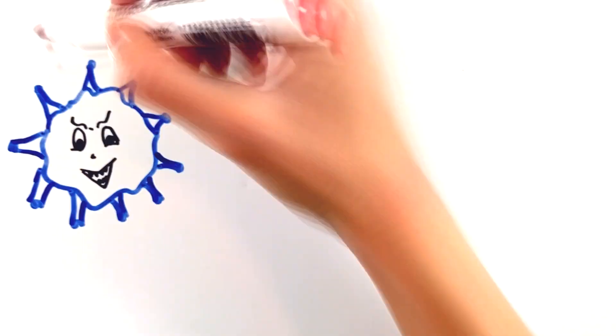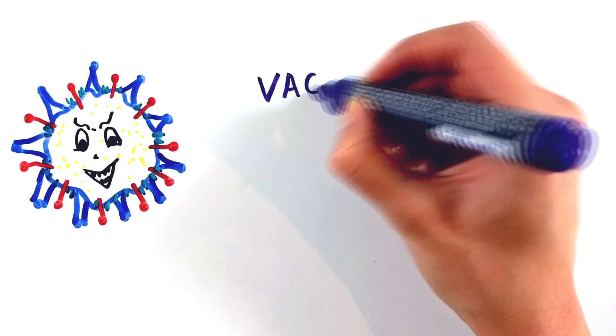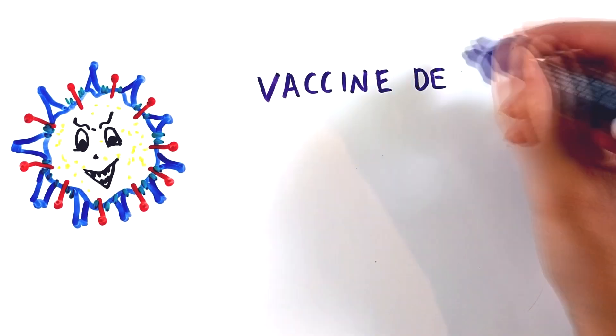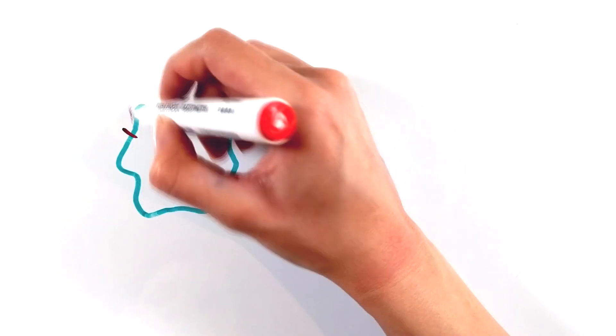However, the problem arises when a pandemic is caused by a novel virus that we have not yet encountered, for which there is no appropriate medicine or vaccine. Vaccine development is a slow and complex process which requires strict testing and regulations.